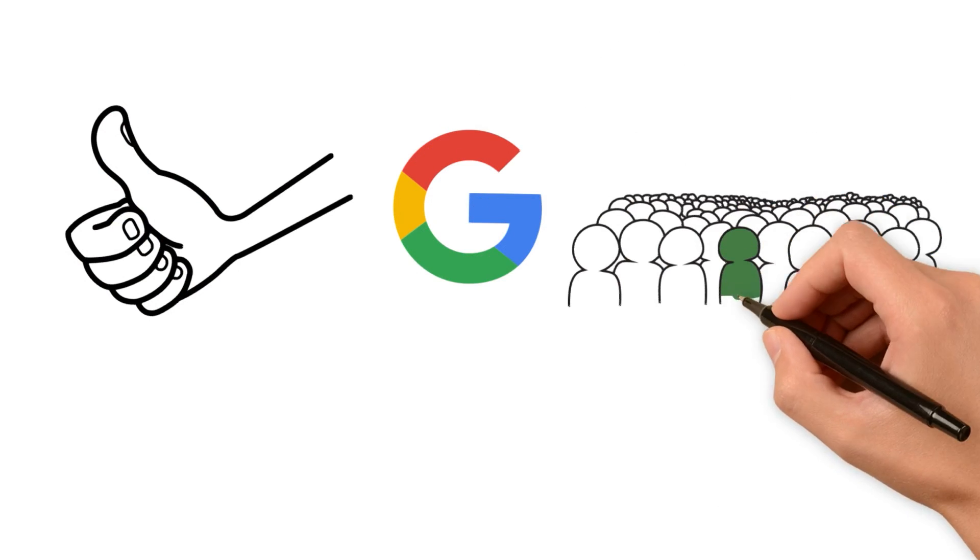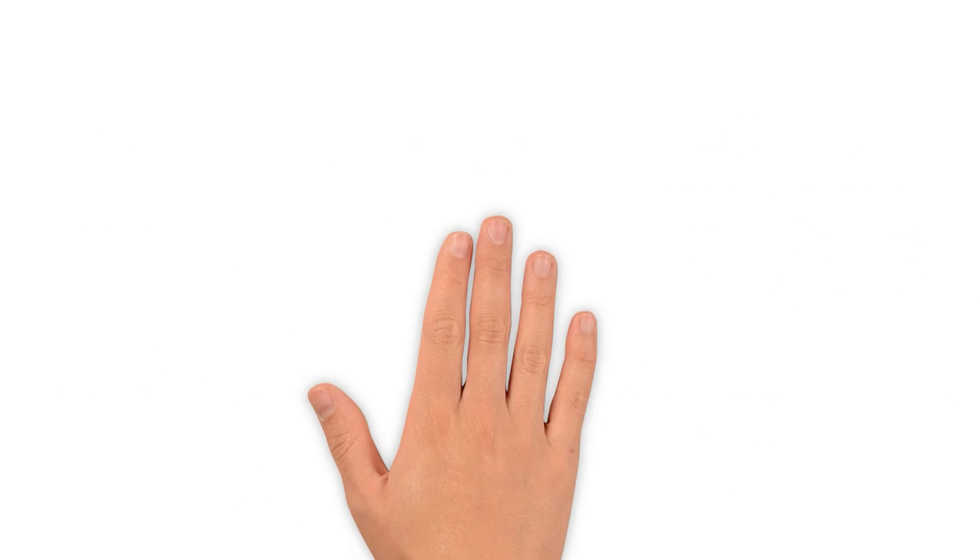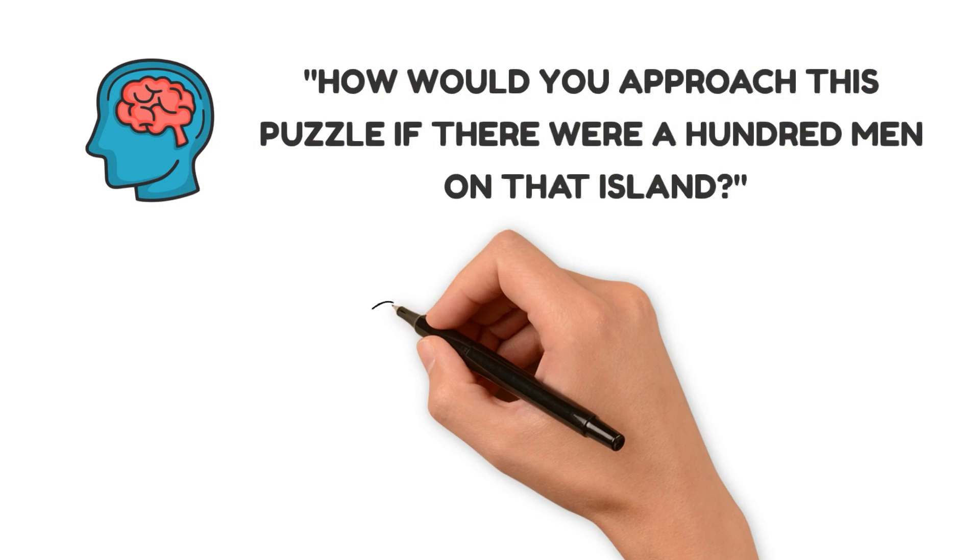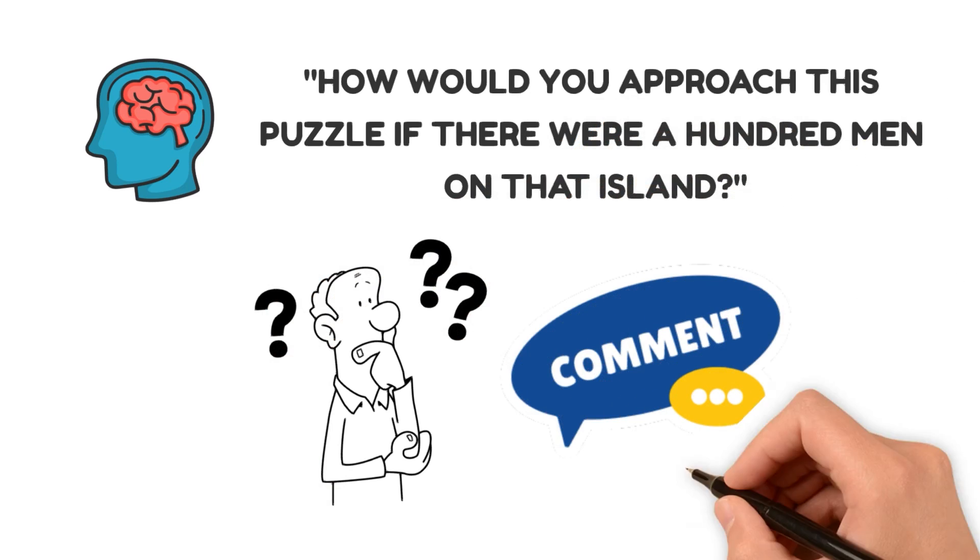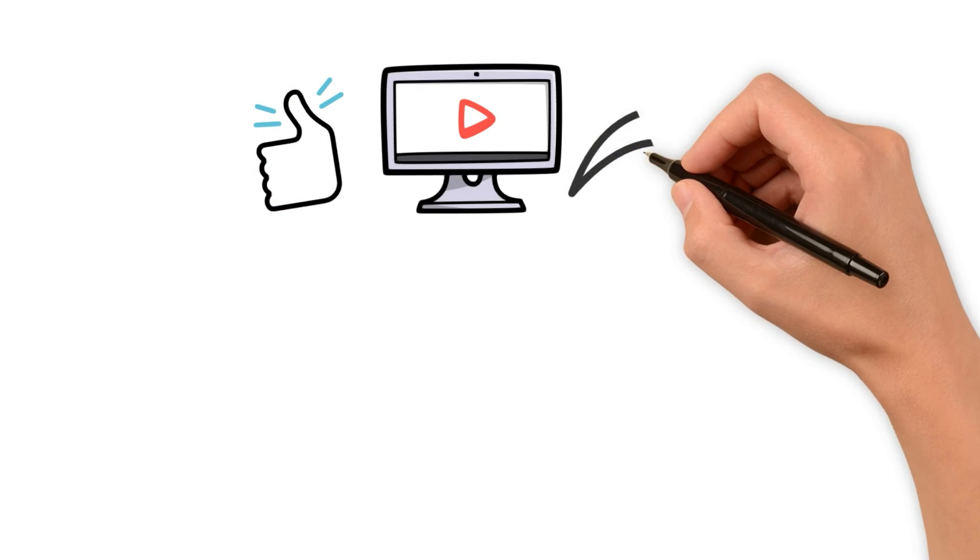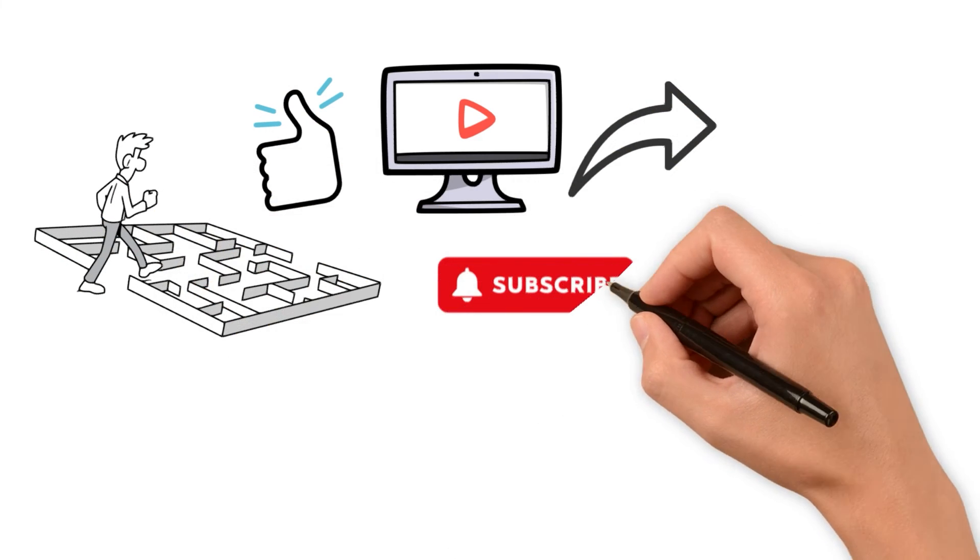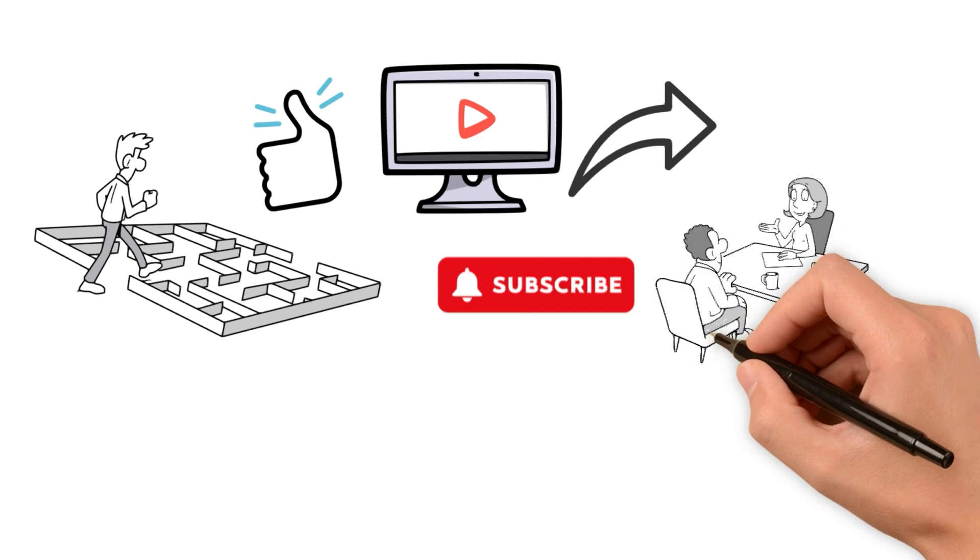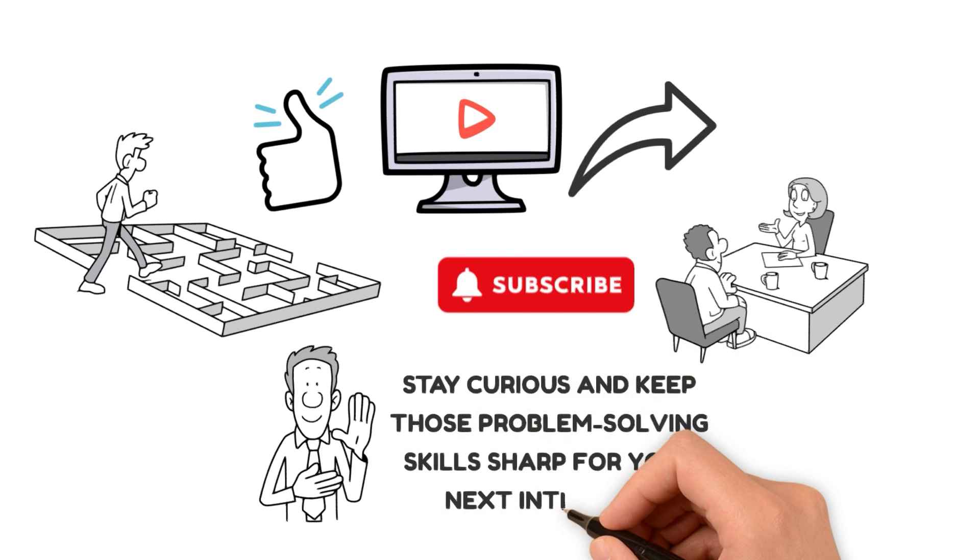You can apply this approach to a larger group like 100 men. Simply adjust the numbers accordingly and follow the same logic. Now, here's a brain teaser for you all. How would you approach this puzzle if there were 100 men on that island? What's your strategy for identifying the odd man with the fewest possible weighings? Share your thoughts in the comments below. If you found this video helpful, don't forget to hit that like button and share it with your fellow problem solvers. And if you want more logical puzzles and riddles, make sure to subscribe to our channel and stay tuned for our weekly brain teasers. Get ready to ace those interviews with your newfound logical prowess. Until next time, stay curious and keep those problem-solving skills sharp for your next interview. Thank you.